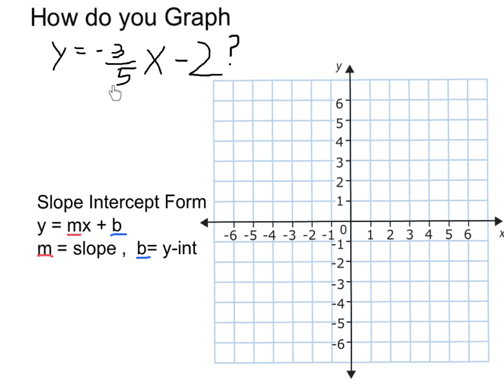This equation can be graphed by interpreting it in slope-intercept form. The coefficient of the x is going to represent the slope. So in this case, we have a slope of negative 3 over 5.